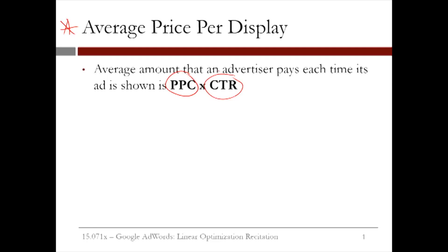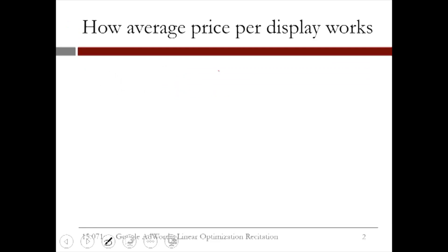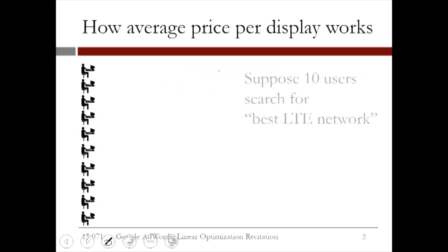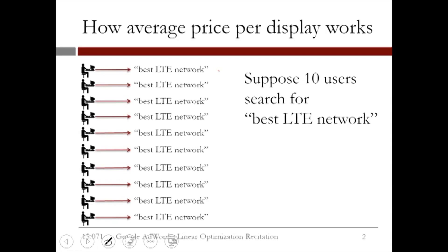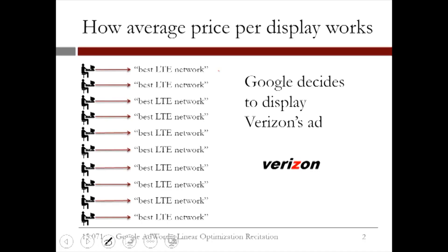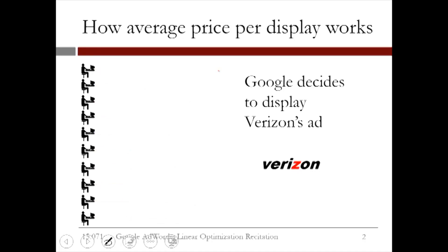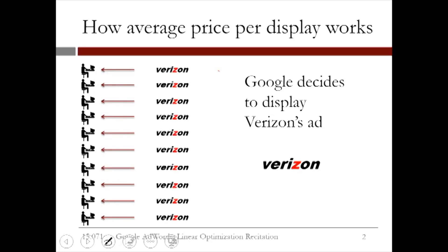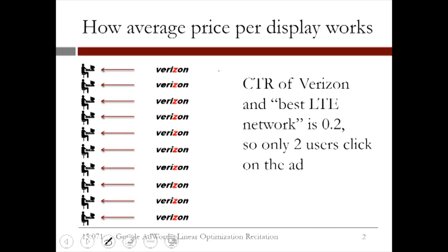Let's go through an example to see how this works. Suppose that we have 10 users who search for 'best LTE network.' Google decides to display Verizon's ad to all of them. We know that the click-through rate for Verizon and for the 'best LTE network' query is 0.2, so only two users click on the ad.